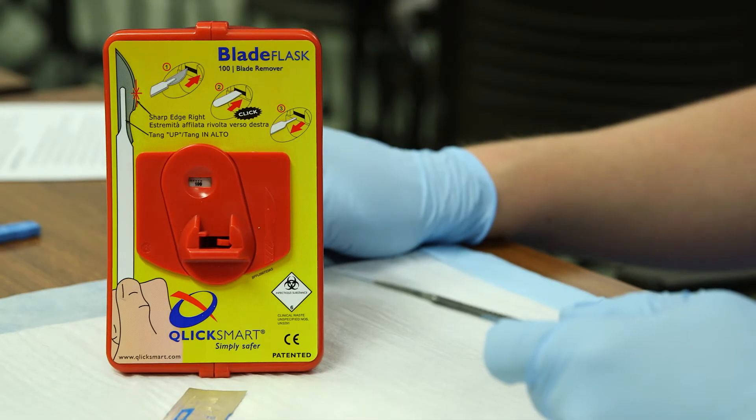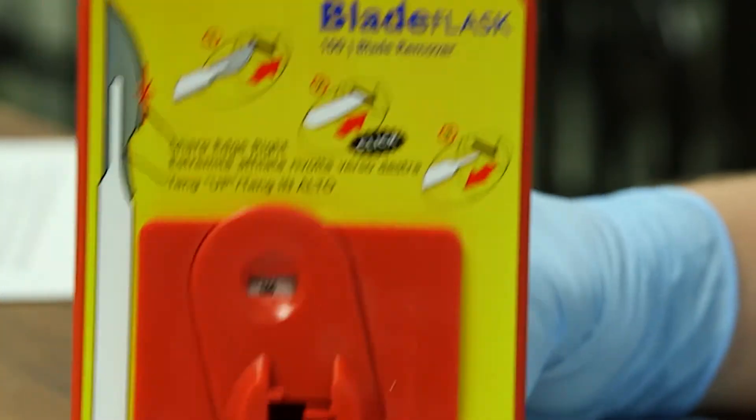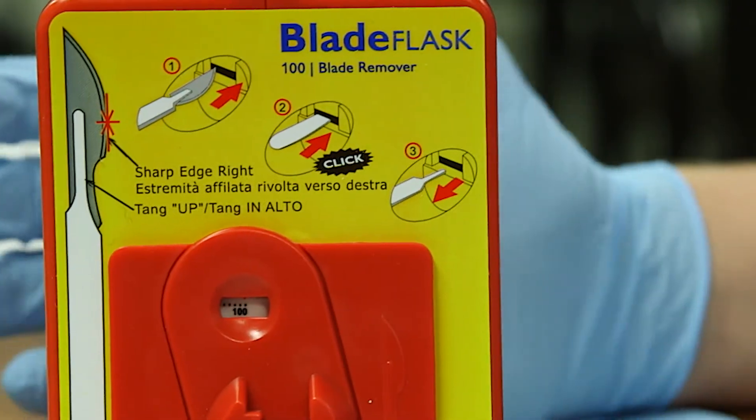Removing the blade. Ideally, the best way to avoid injuries from removing a scalpel blade is to use a removal device like a blade flask. It works as a sharps container.